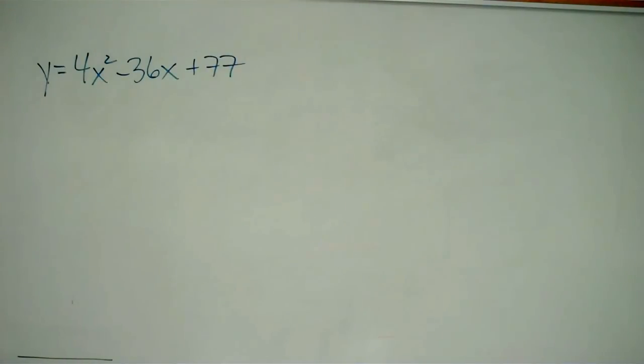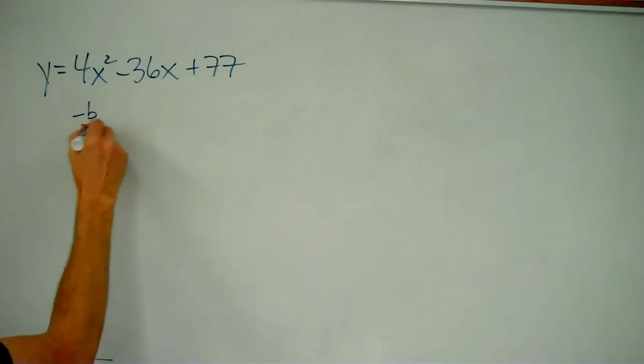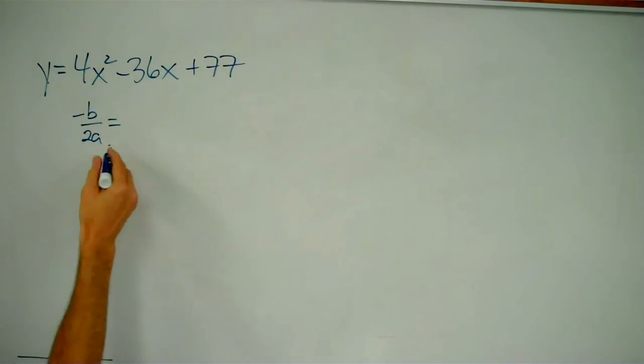So let's start with the vertex. Now, I could complete the square and put this in vertex form and get my vertex that way, but I really don't want to. I'm feeling a little bit lazy right now, and so I'm just going to do things the easy way. I know that the x-coordinate of my vertex is going to be negative b over 2a. In order to do that, I better define my terms.